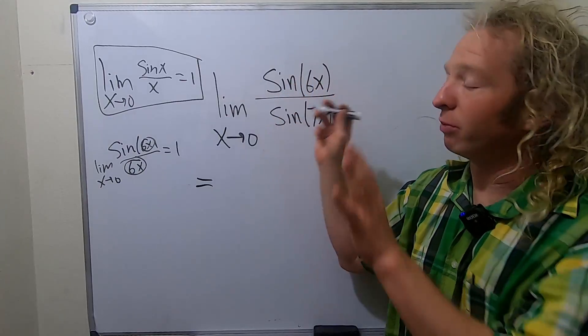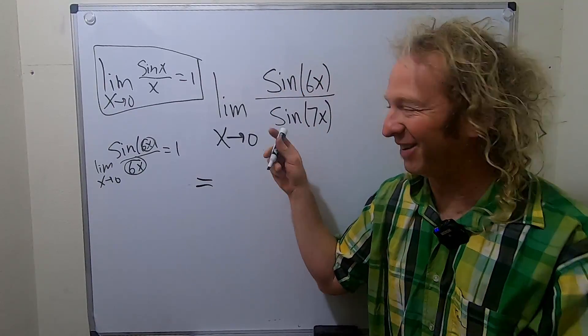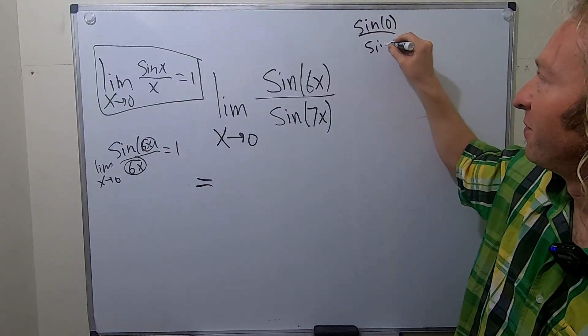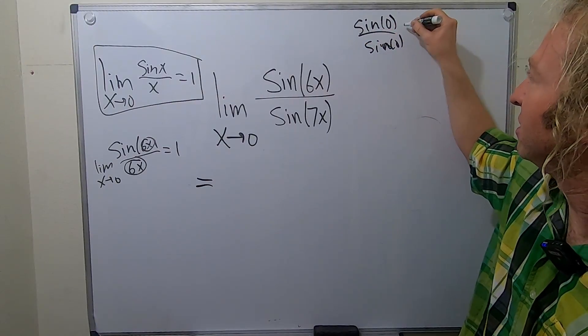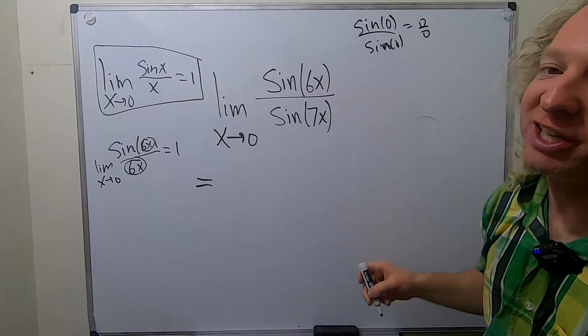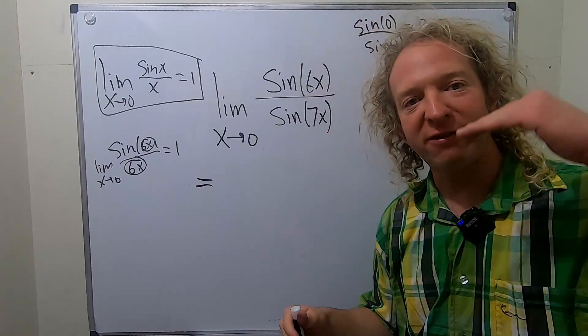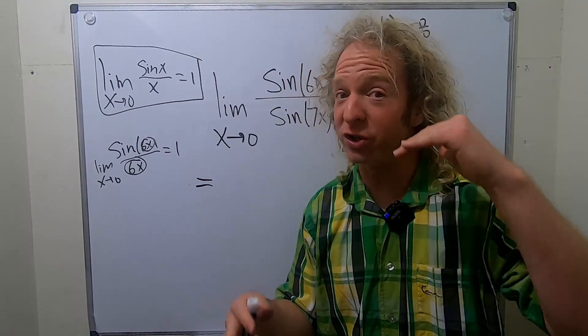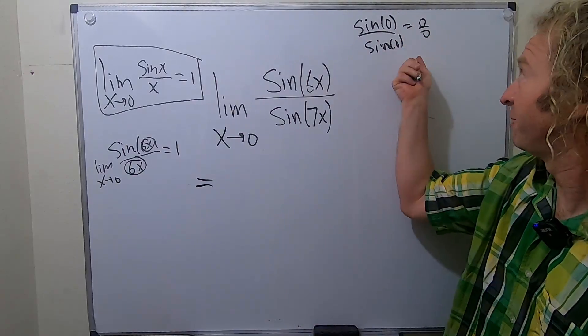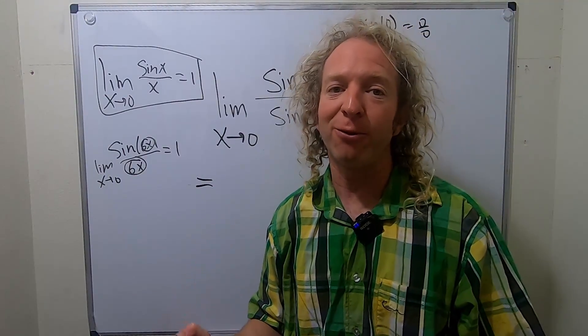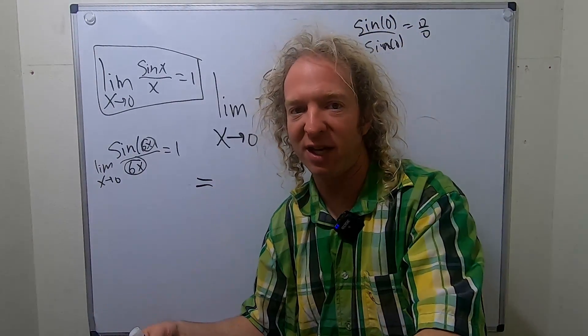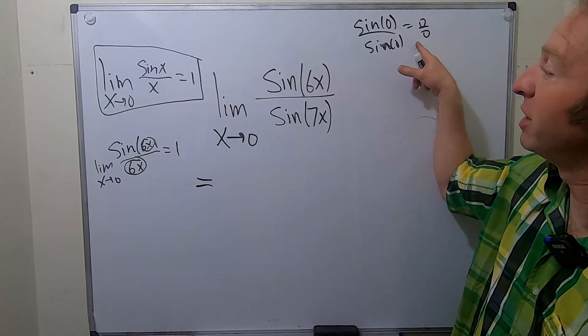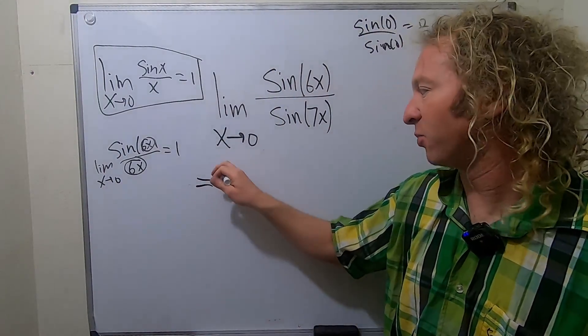So if you plug in 0, you get sine 0 over sine 0. So that's going to be 0 over 0. So that's called an indeterminate form. Whenever you have infinity over infinity or 0 over 0, which is what we have, you have an indeterminate form and then you can use L'Hopital's in that specific case. There's other indeterminate forms, but this is a specific one that allows you to use this rule.